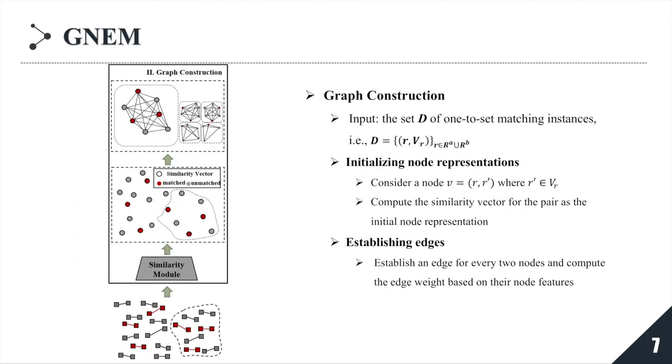After preprocessing, graph construction module organizes the matching pairs in the instance into a graph structure with weighted edges. Considering one matching instance, we treat each pair as a node and compute the similarity vector for the pair as the initial node representation. Then we establish an edge for every two nodes to allow direct information exchange between any two pairs and compute edge weights based on their node features.